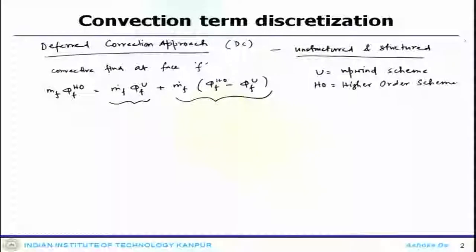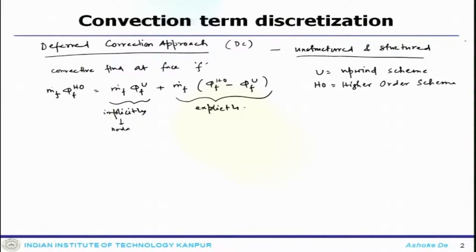When you get these things, the first term of this equation can be calculated implicitly and the second term can be calculated explicitly. The reason the first term can be calculated implicitly is that it can be expressed in terms of nodal values. The second term on the right-hand side has to be evaluated explicitly, using the latest available φ values from the previous iteration in this iterative process.